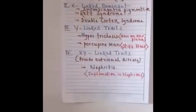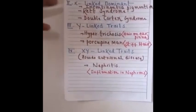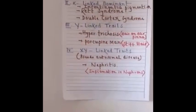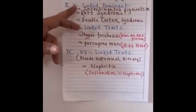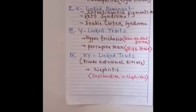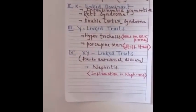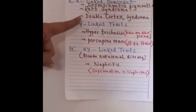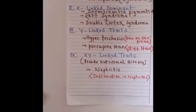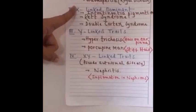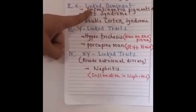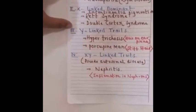Coming to X-linked dominant traits, the first and most important example is incontinentia pigmenti. Incontinentia pigmenti is characterized by mosaic skin pigmentation — 'mosaic' meaning a dotted appearance. People who suffer from incontinentia pigmenti develop white-colored patches or dots on their skin. For NEET and CET level, you need to remember only one important example for X-linked dominant trait: incontinentia pigmenti.